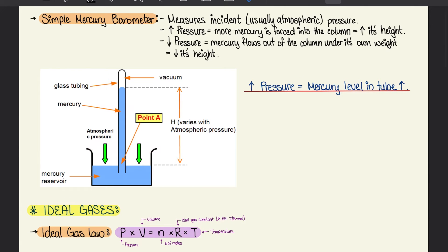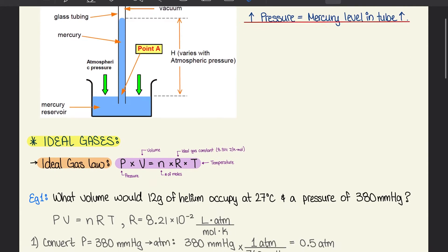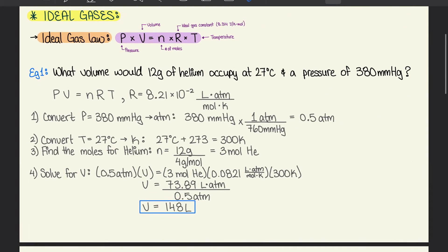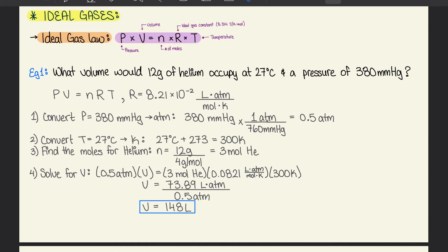Moving on to 8.2, we're going to talk about ideal gases. The ideal gas law is PV = nRT. P is for pressure, V is for volume, N is the number of moles, R is the ideal gas constant which is 8.314 joules over Kelvin times mole, and T is temperature in Kelvin.